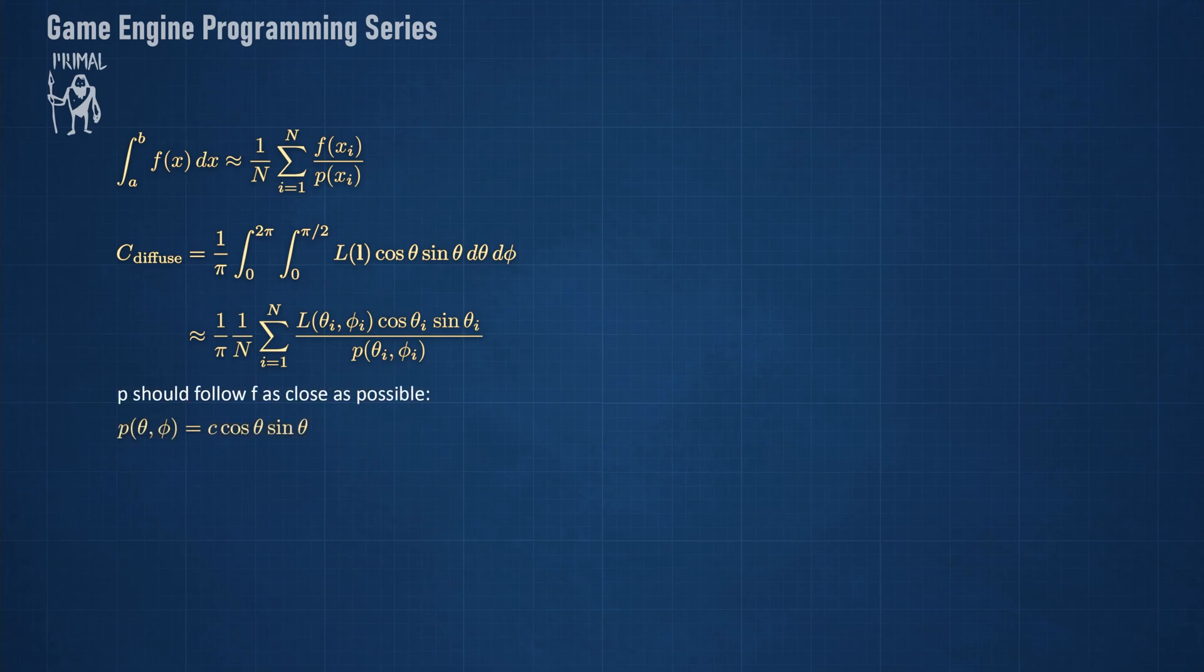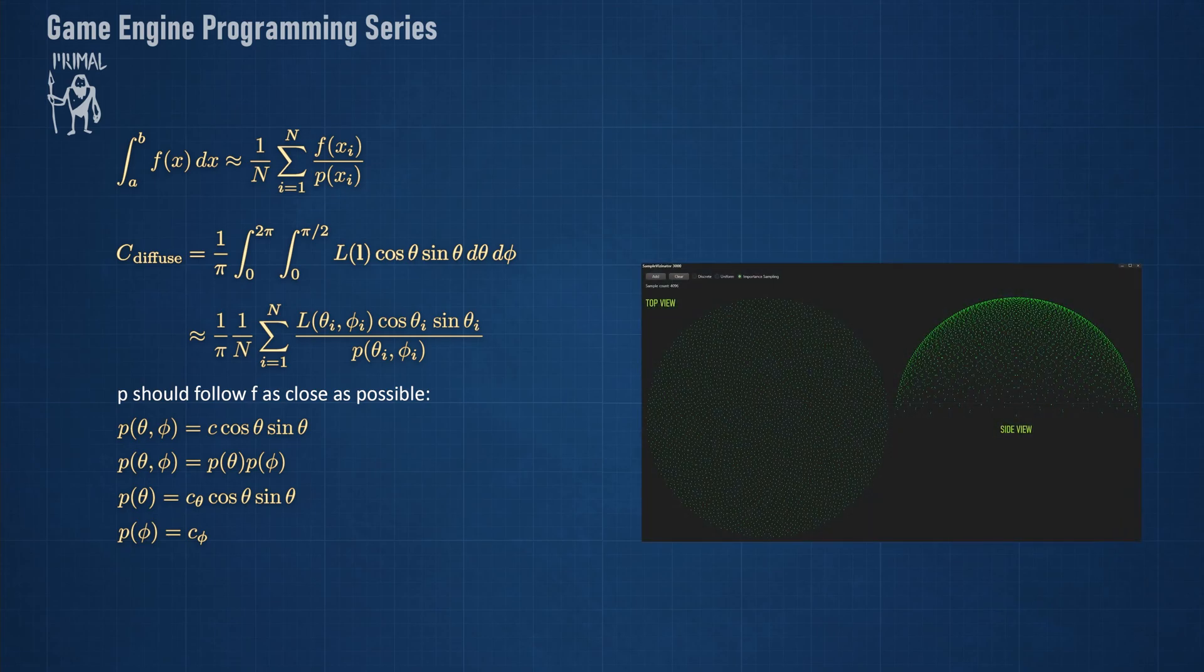So we can take the sine and cosine of theta multiplied by a constant. Note that this expression doesn't depend on phi, and therefore we can split it into two functions that depend on each parameter. P of theta depends only on theta and is multiplied by a constant. And P of phi is just a constant. This makes sense because the sample importance in the direction of phi is the same for all values of phi, and therefore it should be sampled uniformly.